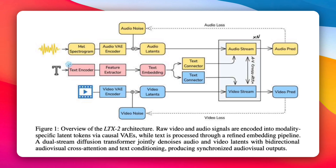The idea behind LTX2 is actually very simple. It takes audio, video, and text and compresses them into smart representations, then lets audio and video talk to each other while they're being generated. Raw audio is first converted into a MEL spectrogram, which is a compact way of representing sound. That goes through an audio VAE encoder, which compresses it into audio latents — a smart compressed version of sound the model can reason about efficiently. Audio is not generated as raw waveforms; it's generated in a compressed latent space for speed and stability.